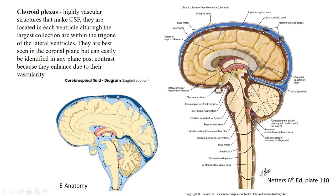To recap CSF flow: CSF is created by the choroid plexus in the floor of the lateral ventricles and roof of the third ventricle; it flows down through the aqueduct of Sylvius into the fourth ventricle, which extends toward the cerebellum, then out through the foramina of Luschka and foramen of Magendie to bathe the rest of the spinal canal and travel up through the arachnoid spaces into the rest of the brain.